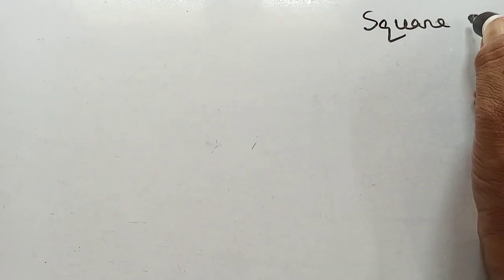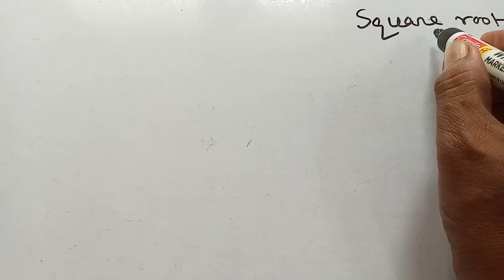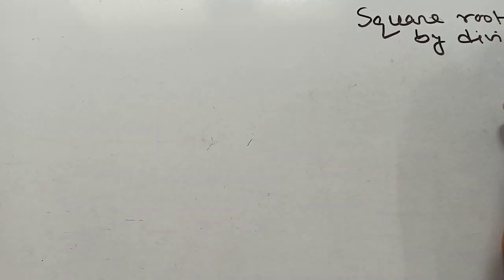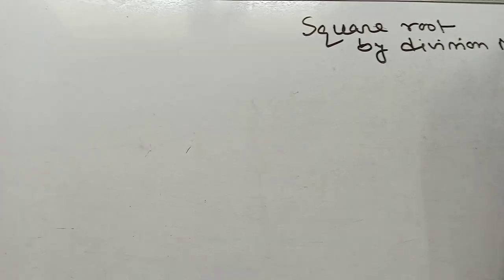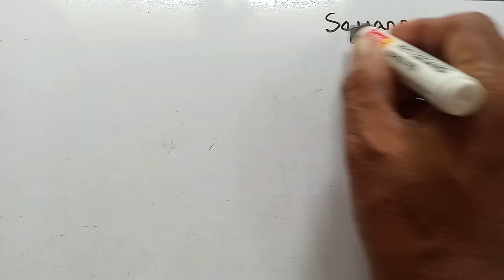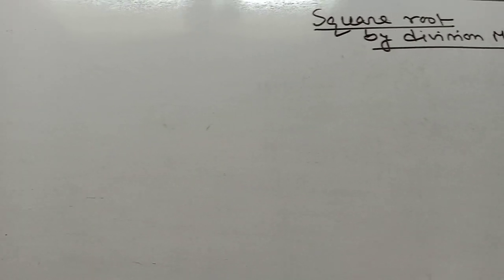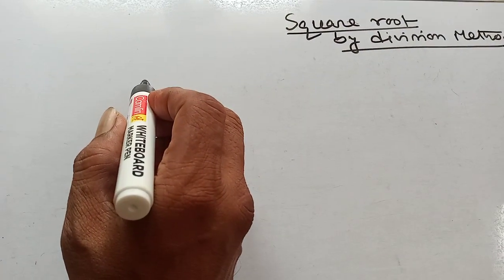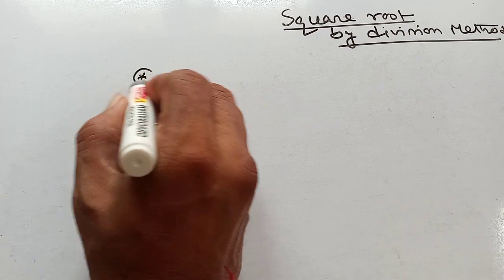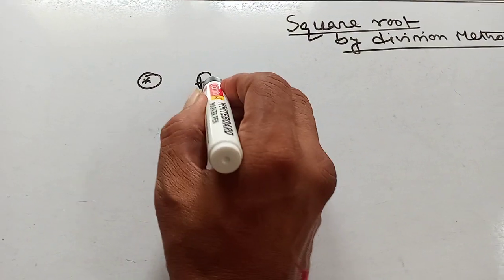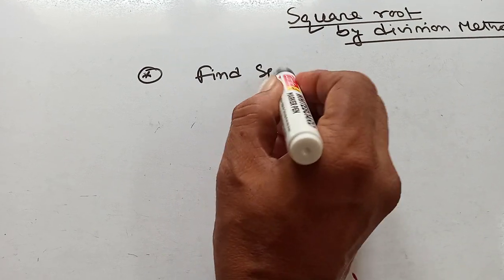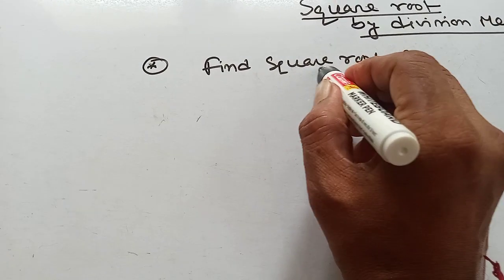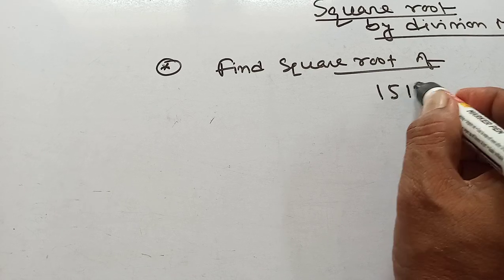Square root by division method. We will find the square root of 15129.